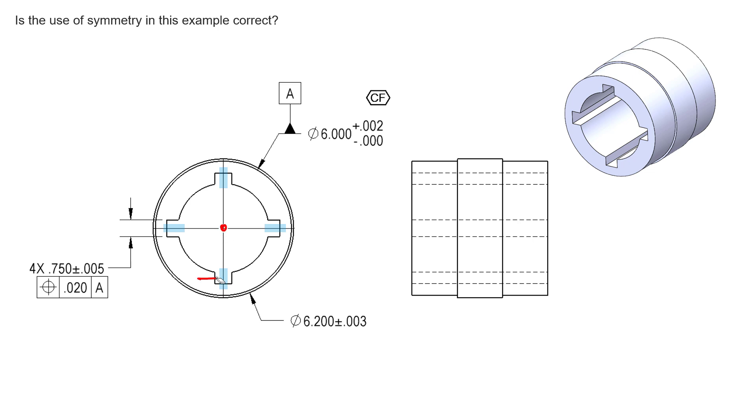So this is our datum axis. These are the tolerance zones for each one of these mid-planes based on this feature control frame. And so the keyway down here can shift over to the left and have its mid-plane exist there, or it can shift over to the right and have its mid-plane exist over here.